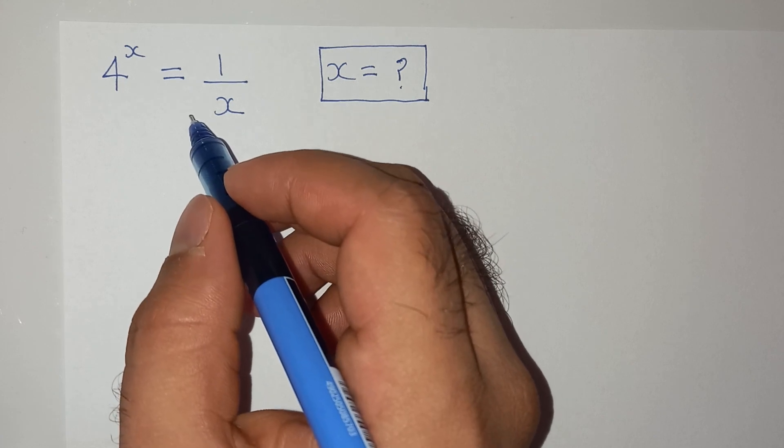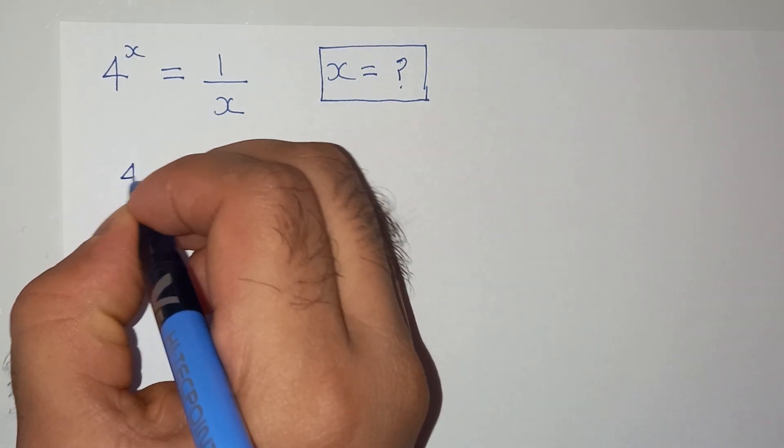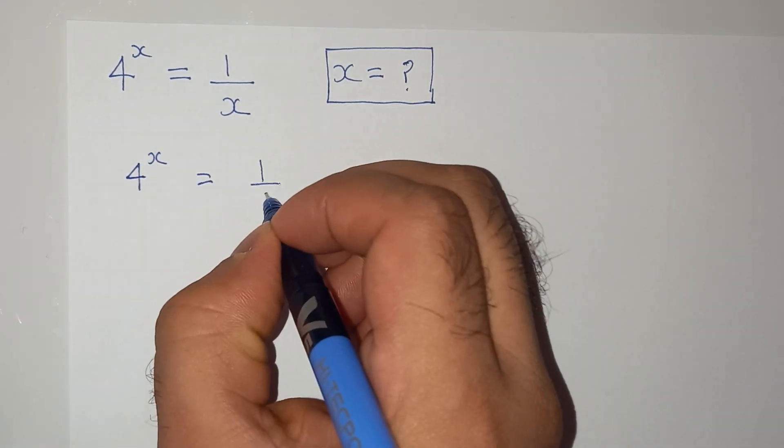How to solve this question? Alright, I am going to rewrite this equation again. So this is 4^x = 1/x.